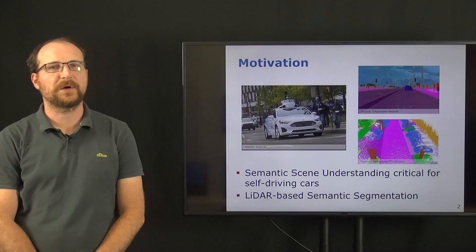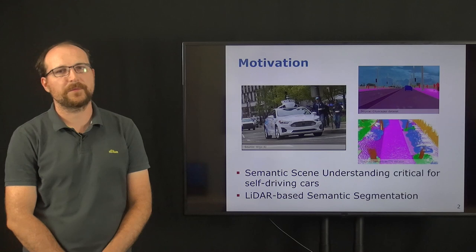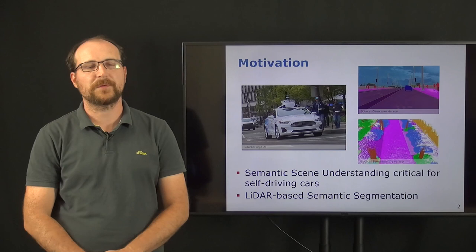In this work we are interested in semantic scene understanding, which is a critical part of self-driving cars. In particular we are interested in semantic segmentation, where we want to assign each pixel of an image with a semantic label, but also point clouds where we want to assign each point of the point cloud semantic label.